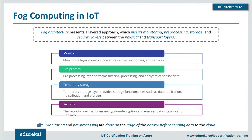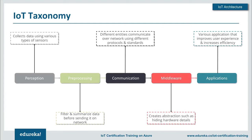There is also edge computing, a variation of fog computing, where operations are performed on individual nodes or sensors rather than at the gateway. These edge points become locations to perform operations on collected data. The various taxonomy layers associated with IoT are key concepts present in most architectures, though each system requires its own level of customization.